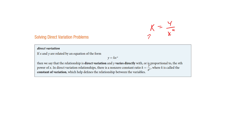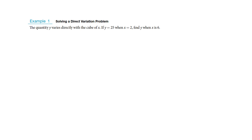If y goes up, x has to go up. If y goes down, x would have to go down, because they have to stay the same for that constant at all times. You can see it as this ratio where they have to stay in that exact same ratio all the time. If you turn that into a formula, you get y equals the constant times x — it's just rearranged so they stay in that constant ratio.